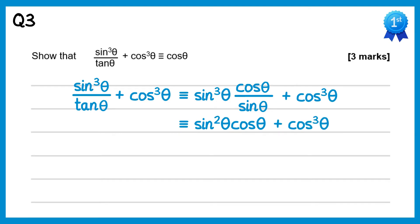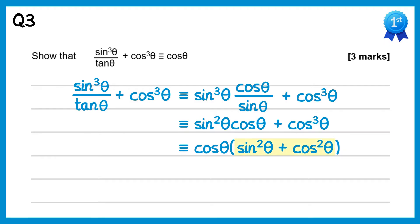Now we can factorise out cosθ, giving cosθ times (sin²θ + cos²θ) inside the bracket. Since sin²θ + cos²θ = 1, this is just cosθ times 1, which is cosθ — which is what we were trying to show.